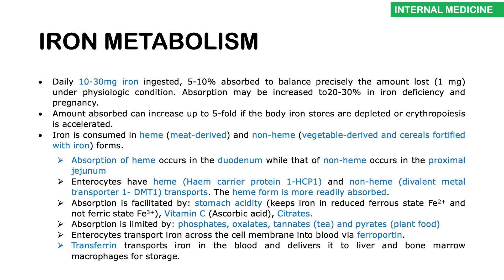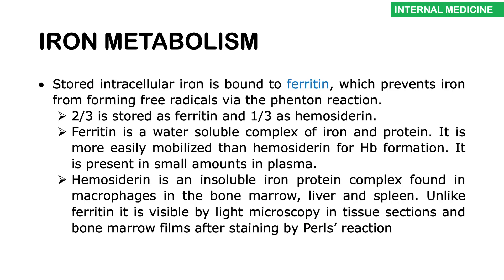Transferrin carries iron to the liver and bone marrow where it is stored. Iron can be stored as ferritin — the storage form — or deposited in tissues as hemosiderin, which is considered lost. Two-thirds is stored as ferritin and one-third as hemosiderin. Ferritin is a water-soluble complex of iron bound to protein, and is more easily mobilized than hemosiderin. Levels of transferrin, ferritin, and serum iron can be used to judge the type of anemia — this is what we call iron studies. Hemosiderin is an insoluble iron-protein complex found in macrophages in the bone marrow, liver, and spleen, and is visible by light microscopy after staining with Perls' reaction.